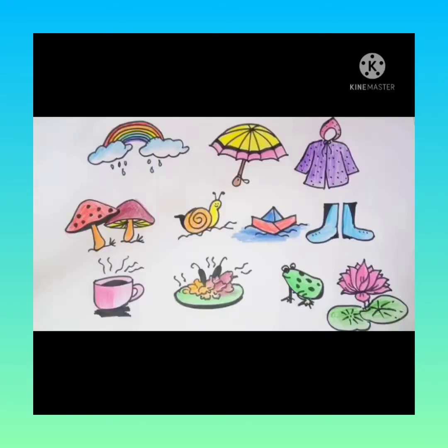And we had also discussed what type of animals or insects can you see in rainy season. We can see frog, snail, and we can also see mushrooms.